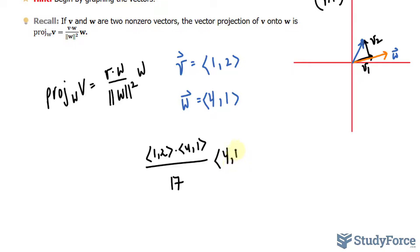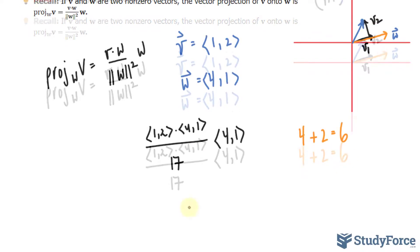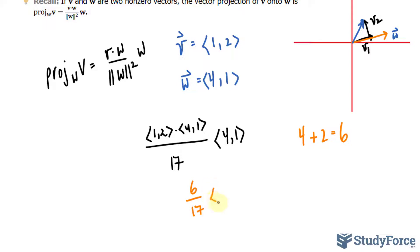Let's find the dot product of V and W. 1 times 4 is 4—that's for the x components—and 2 times 1 is 2. Adding this up, we get 6. So I have the scalar 6/17 times ⟨4, 1⟩. We multiply the scalar to 4 and the scalar to 1, where we get 24/17, 6/17. These are the components of V₁.